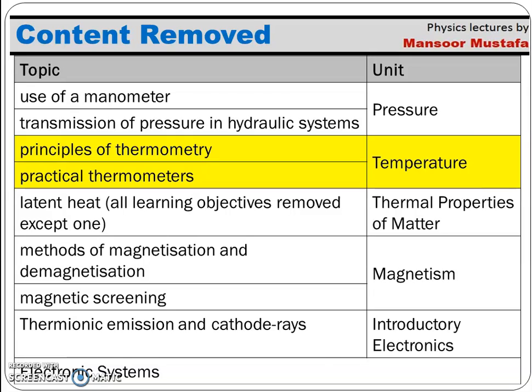Since those two topics make up the complete chapter of temperature, the entire temperature chapter is removed from the new syllabus. The next removed topic is from thermal properties of matter: latent heat. Almost all learning objectives related to latent heat are being removed except one.